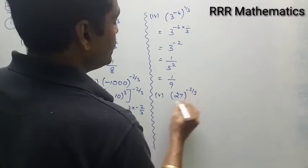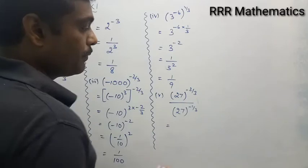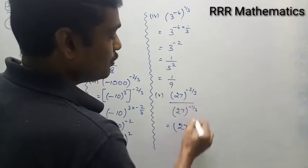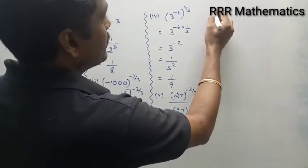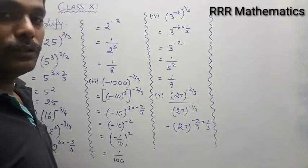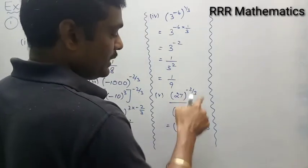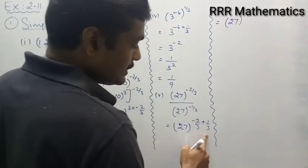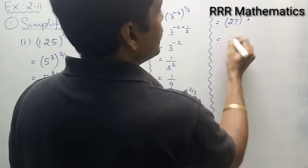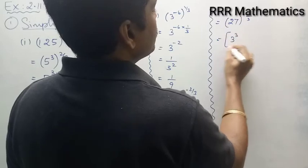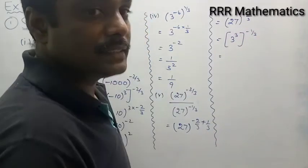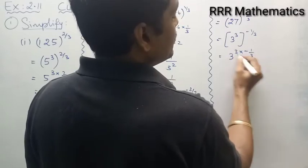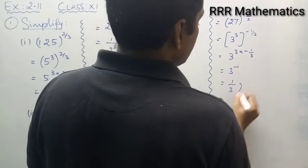Fifth problem: 27 whole power minus 2 by 3, divided by 27 whole power minus 1 by 3. Here 27 and 27 have the same base, so I can simplify directly. Bringing the denominator power to the numerator gives 27 power (minus 2/3 + 1/3). Taking LCM, the power becomes minus 1 by 3. What is 27? Prime factorization gives 3 cubed. Then multiplying the power: 3³ × (−1/3) — the 3s cancel — giving 3 power minus 1, which comes to the denominator as 1 by 3.